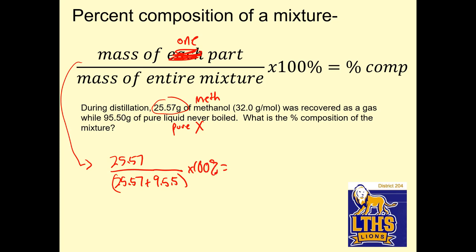So 25.57 divided by quantity 25.57 plus 95.5, close parentheses, and that is 21.1%. This looks shady. It's like 9.555. I'm just going to rewrite it to be clear. All right, so it's 21.1% methanol, and that means that 100 minus 21.1 is 78.9% pure X, right? And we called our liquid pure X. That's all.